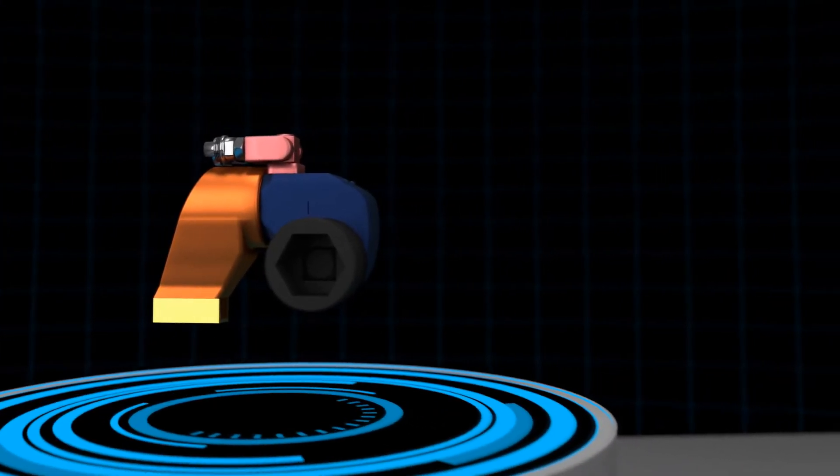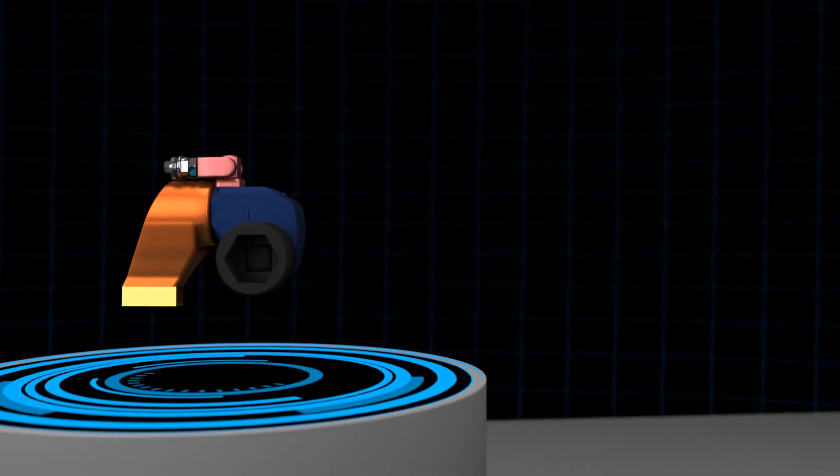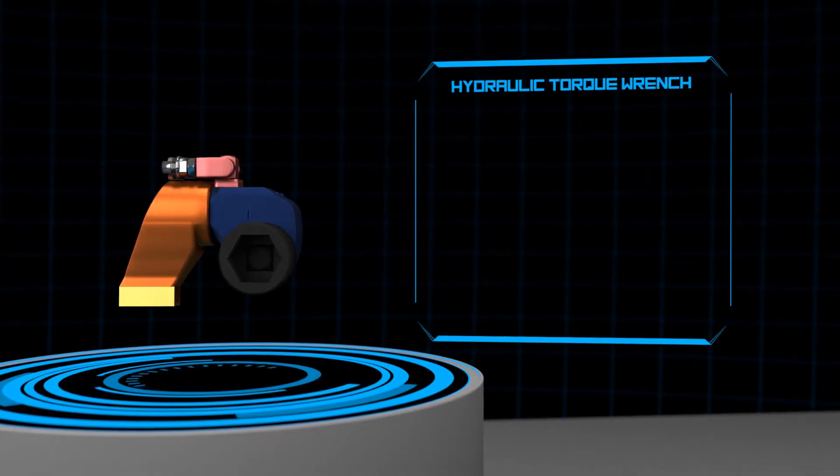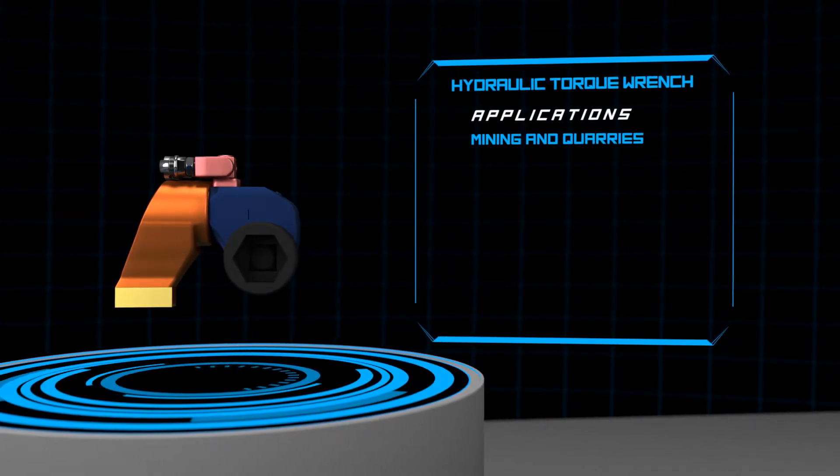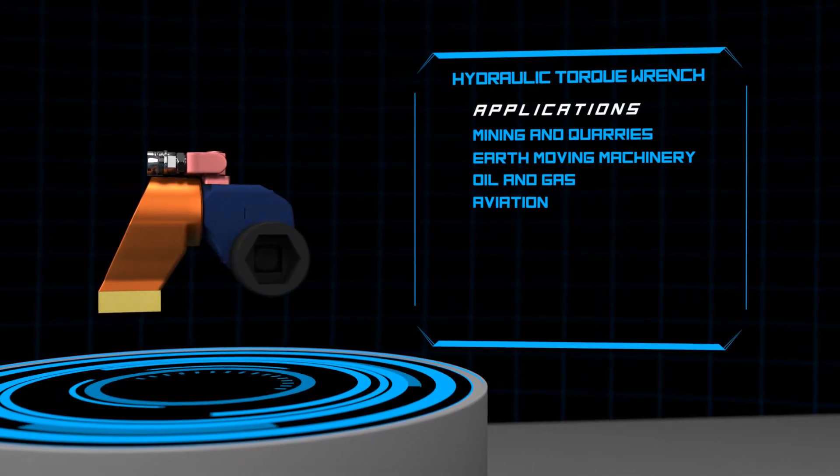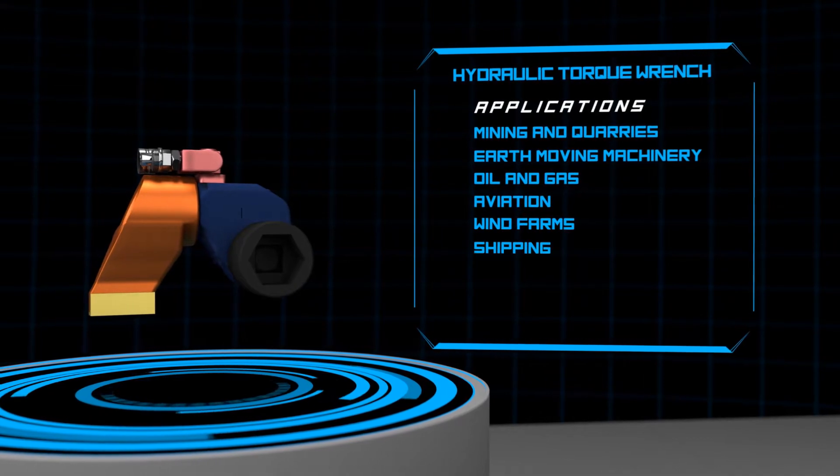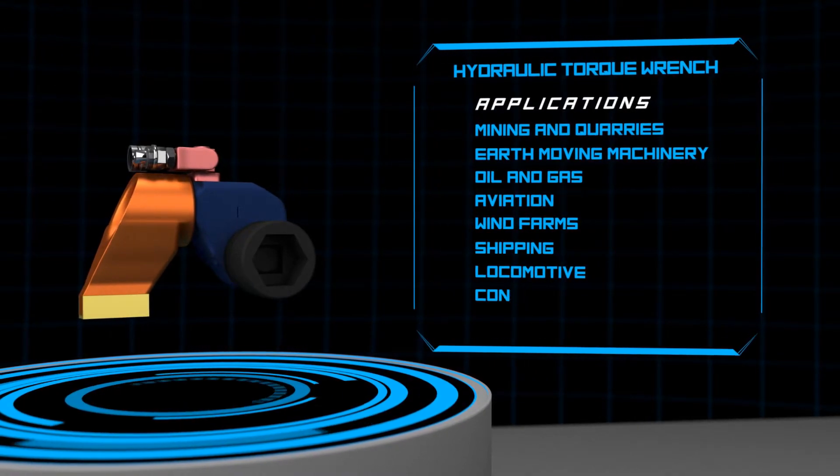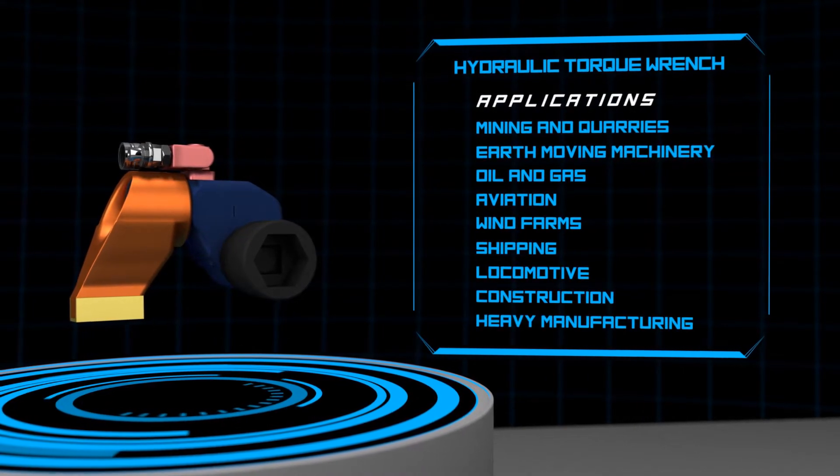Each year more than 40,000 new hydraulic torque wrenches are sold worldwide into industries such as mining and quarries, earth-moving machinery, oil and gas, aviation, wind farms, shipping, locomotive, and many other areas of construction and heavy manufacturing.